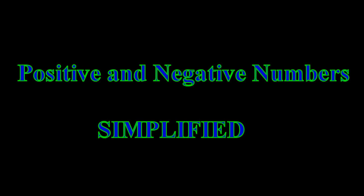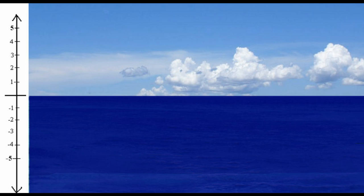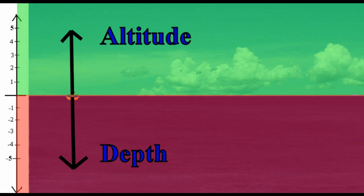Let's look at an image of the sky and the water. Now imagine yourself sailing on a boat in the middle of the ocean. You're at zero, or sea level, on an imaginary number line. Everything above you would be measured in height or altitude. Altitude is the measure of how high something is above zero, or sea level, and is a lot like a positive number.